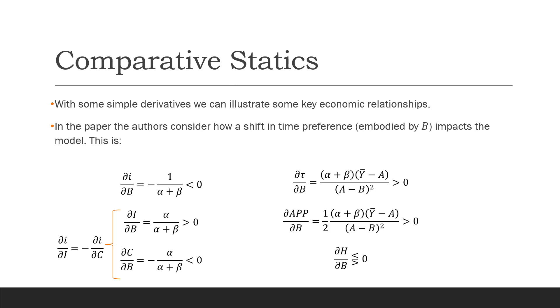In the paper, the authors consider how a shift in time preferences, embodied by β, impacts the model. With an increase in β, we're going to see a fall in interest rate, an increase in our equilibrium amount of investment, and a fall in our equilibrium amount of consumption. These move proportionally to each other.